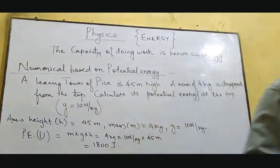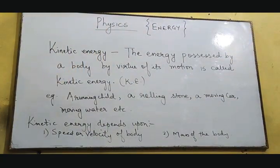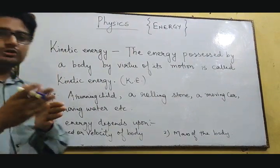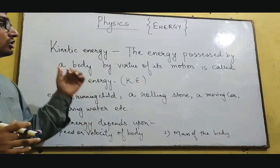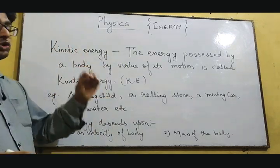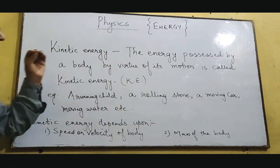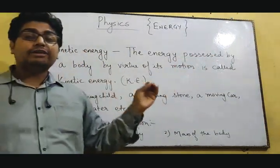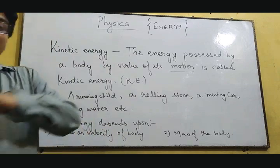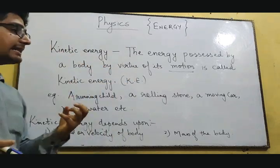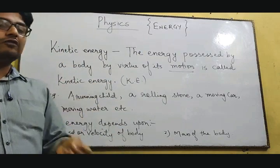After potential energy, we will now talk about kinetic energy. Both energies — potential and kinetic — combine together to form mechanical energy, and our main point was to know what mechanical energy is. Kinetic energy is the energy possessed by a body by virtue of its motion. If the body is actually moving from one place to another place, the energy it possesses is known as kinetic energy. A moving body consists of kinetic energy, written as KE.